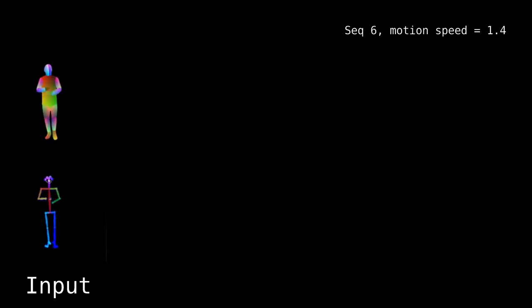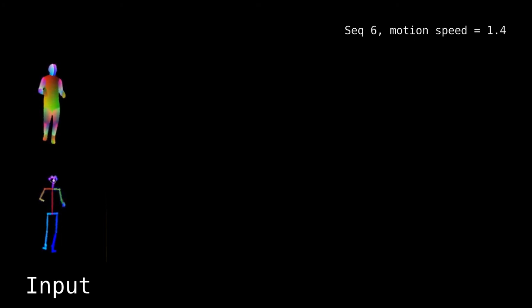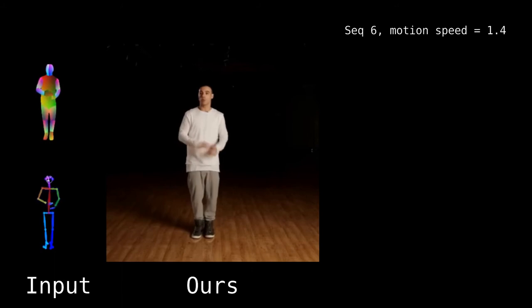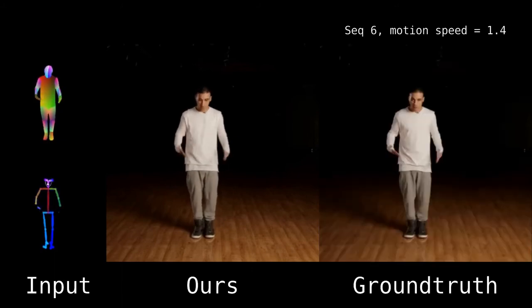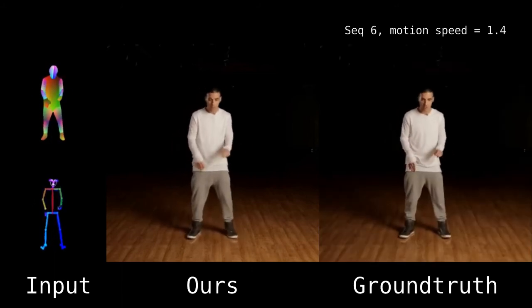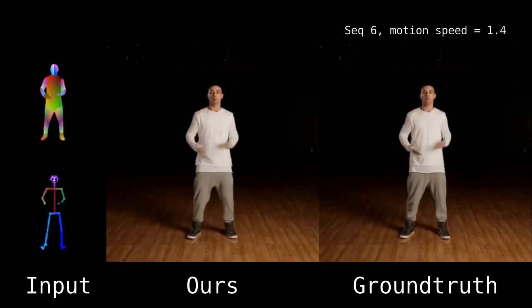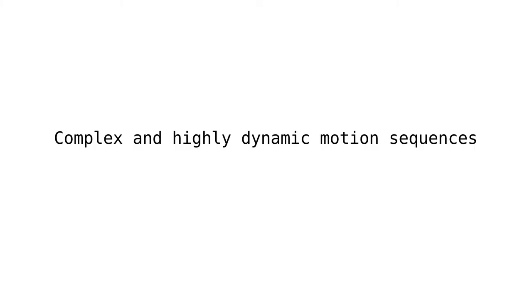Our method learns to synthesize the dynamic appearance of an actor performing a given motion sequence. We represent the input motion as a sequence of per-frame dense body UV coordinates and key points rendered in 2D. Our method adopts a star-game type of architecture that is conditioned on motion features to capture dynamic appearance changes for loose garments. We also utilize positive motion cues to refine the per-frame pose estimations that are often noisy and have imperfections.